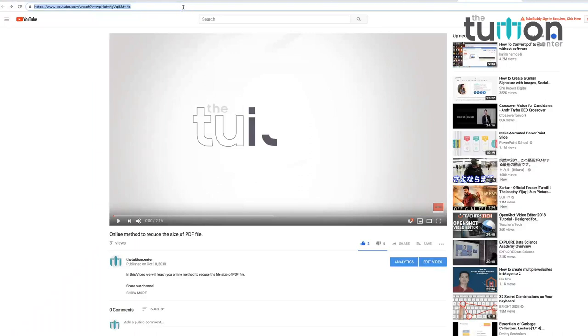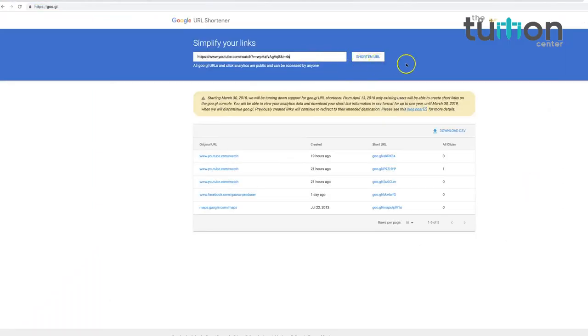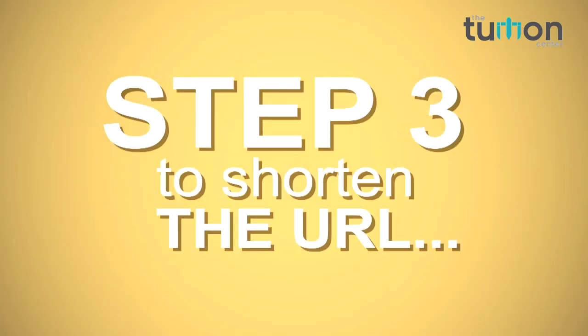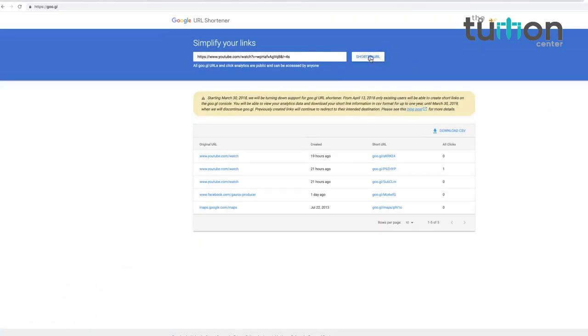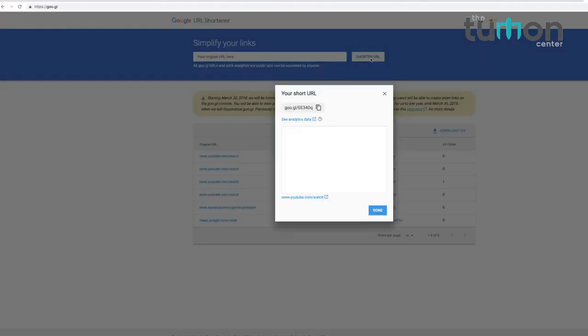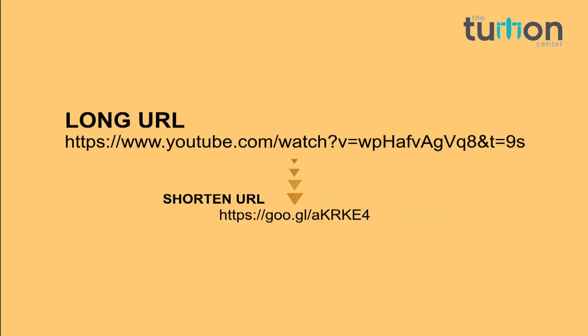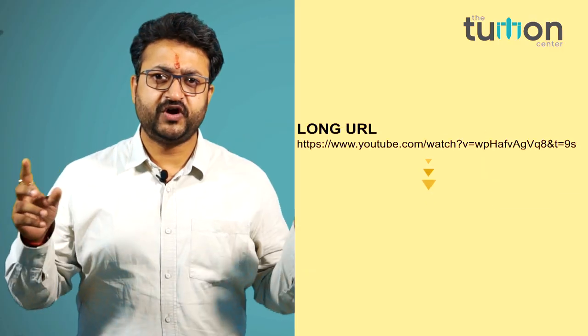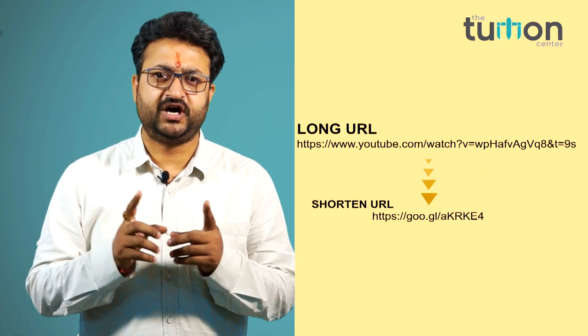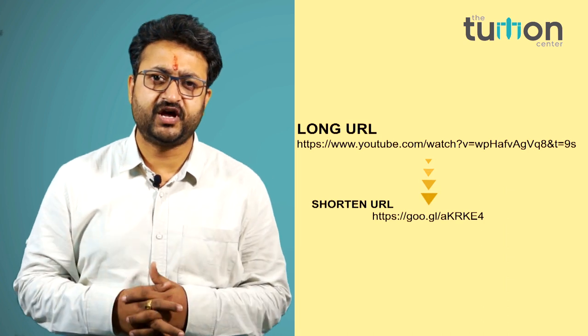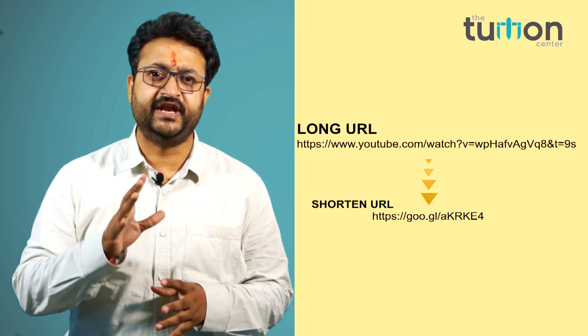Step 2 — copy and paste the URL to be shortened in the given space. Step 3 — click Shorten URL. And you did it! Your long URL has been shortened. Now you can copy and paste this URL wherever you need.